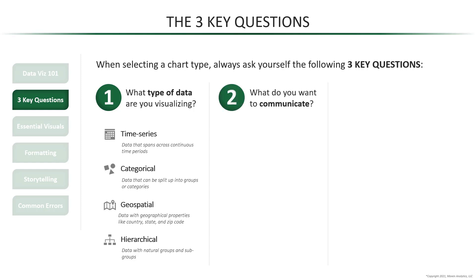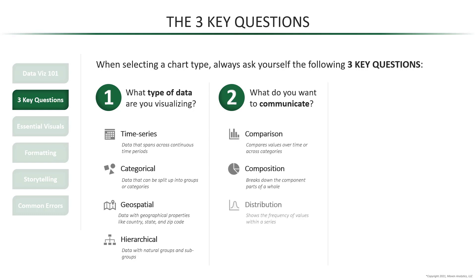Now question number two: what do you want to communicate? Are you trying to show comparison, composition, distribution, or a relationship? This is key because showing comparison for categorical data requires a different chart type than showing composition for categorical data.